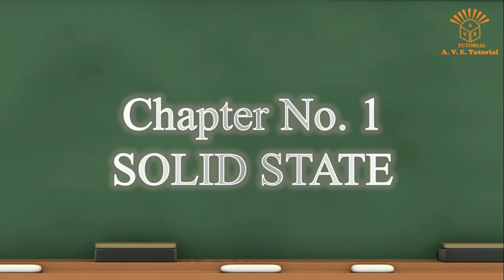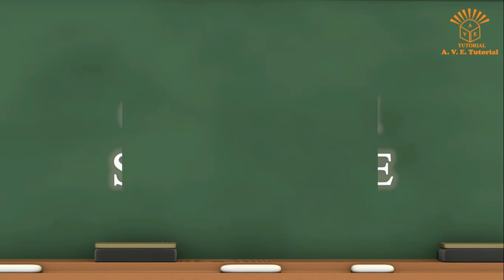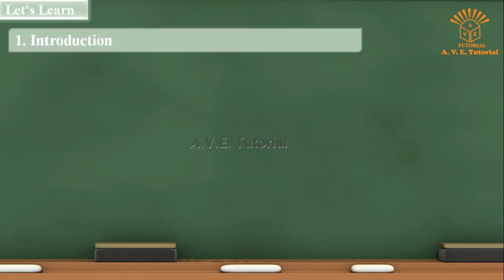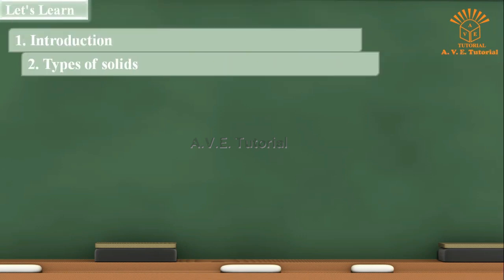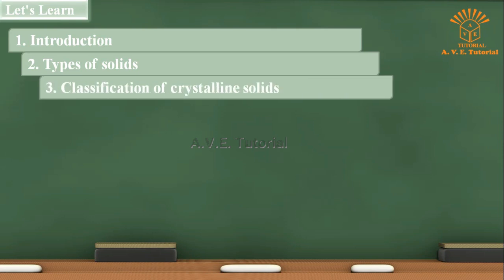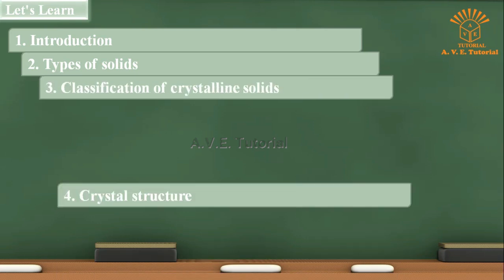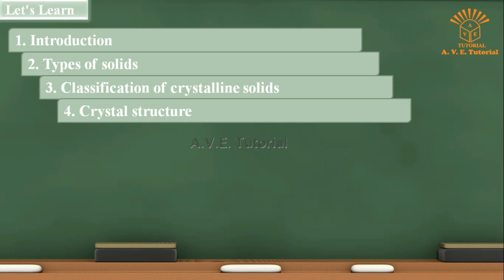Chapter number one: Solid State. Let's learn. In this chapter we will study: one, Introduction; two, Types of solids; three, Classification of crystalline solids; four, Crystal structure; five, Cubic system.